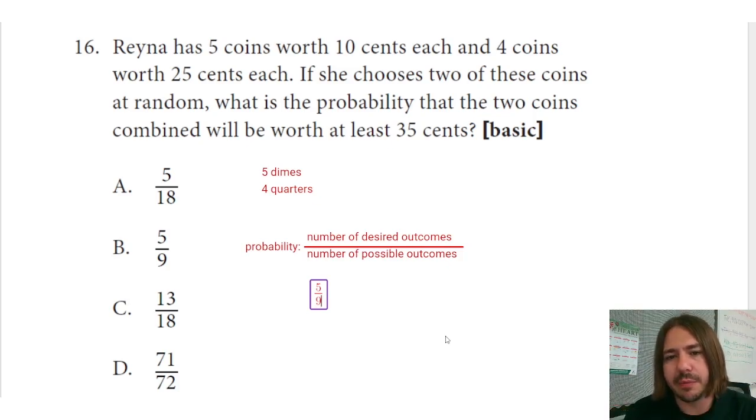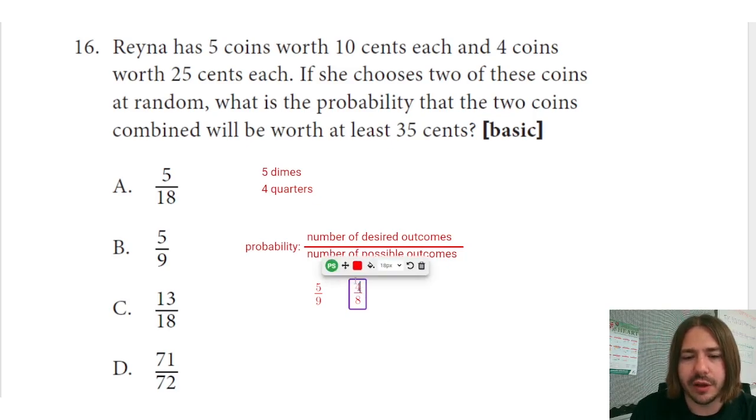When we have these combined probabilities where the second event depends on the first event, you have to think about how many possible outcomes are you actually left with. So we pick one dime, the probability of the second one being a dime, well since we've already picked one dime and we've removed it, there's only four dimes left and there's only eight total coins left. So on that second event for the second coin, there's a probability of four out of eight or 50 percent chance.